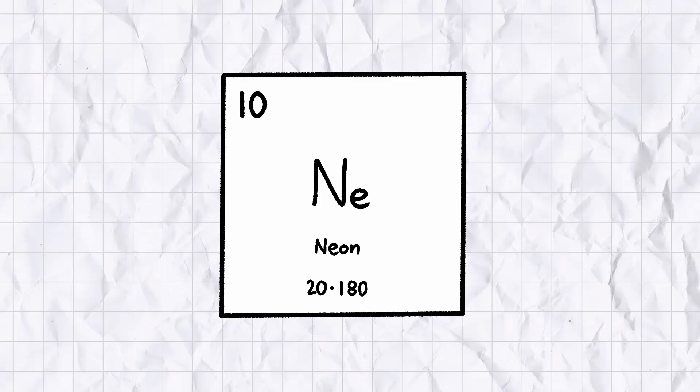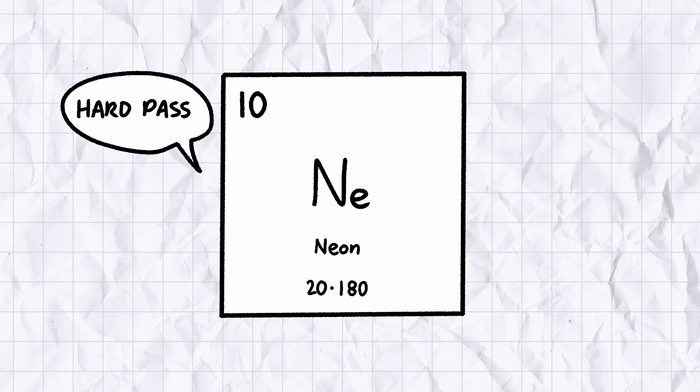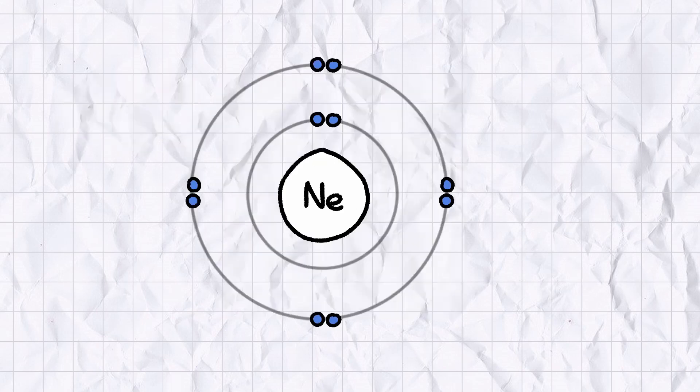And like its little sister helium, it has no interest in reacting with other chemical compounds under standard conditions. Like all of the noble gases, neon atoms have full outer shells of electrons, which experiments have shown to be an extremely stable configuration.